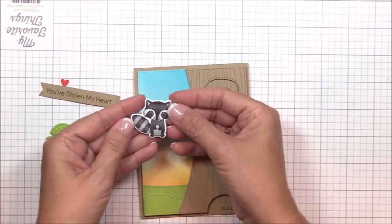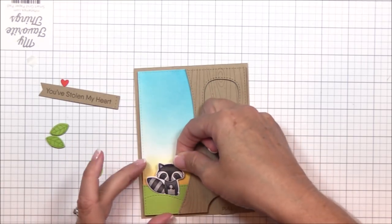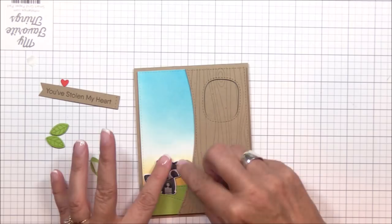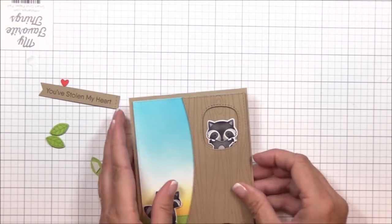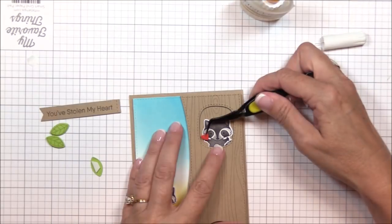I stamped, colored, and die cut another of the raccoon images from the friendly raccoon stamp set, and I'm adhering him to the image panel with a foam square. I'm adhering a heart to the hand of the pop-up raccoon with some liquid adhesive.